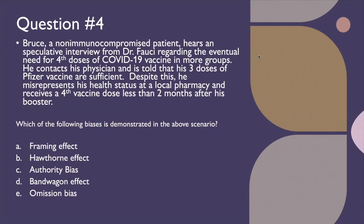Question number four: Bruce, a non-immunocompromised patient, hears a speculative interview from Dr. Anthony Fauci regarding the eventual need for fourth doses of COVID-19 vaccine in more groups. He contacts his physician and is told his three doses of Pfizer vaccine are sufficient. Despite this, he goes to his local pharmacy, misrepresents his health status, and receives a fourth vaccine dose less than two months after his first booster. Which bias is demonstrated — framing effect, Hawthorne effect, authority bias, bandwagon effect, or omission bias?